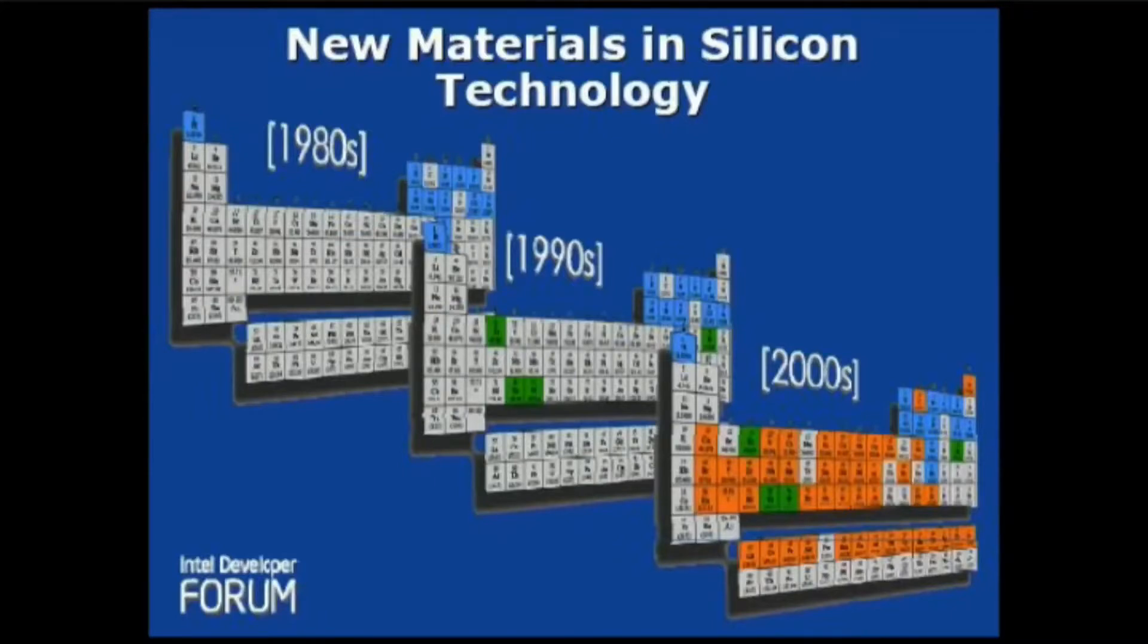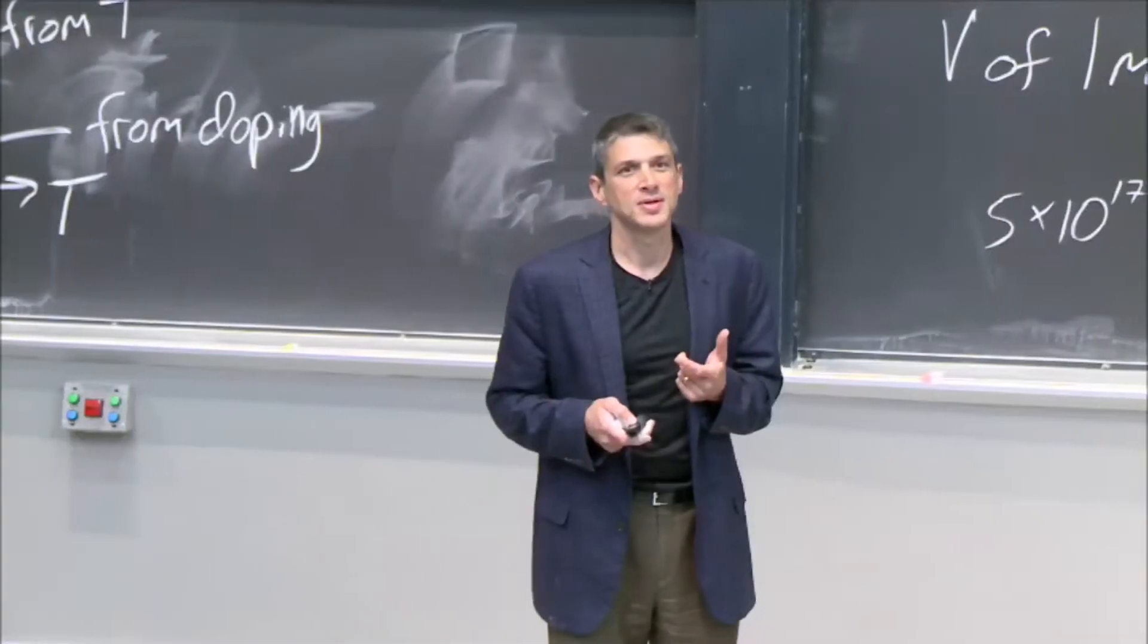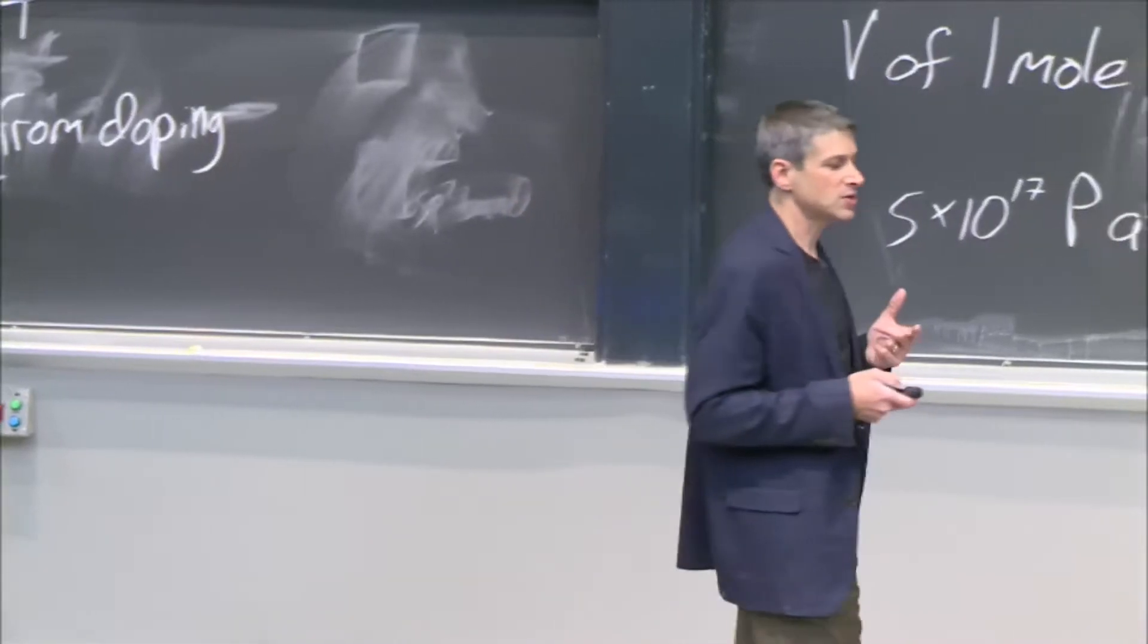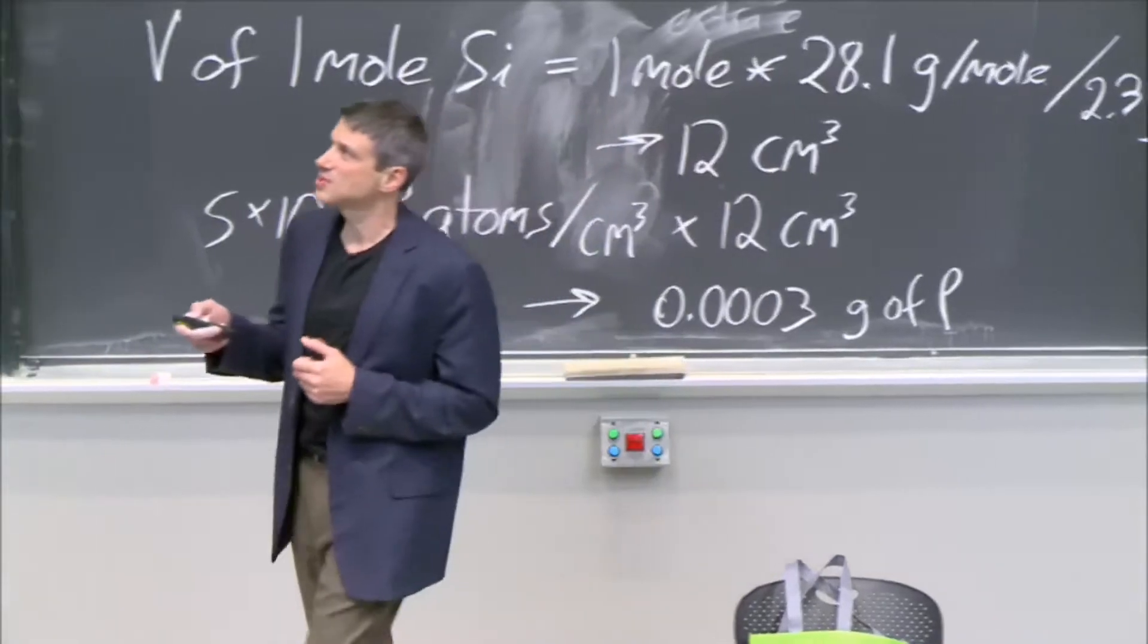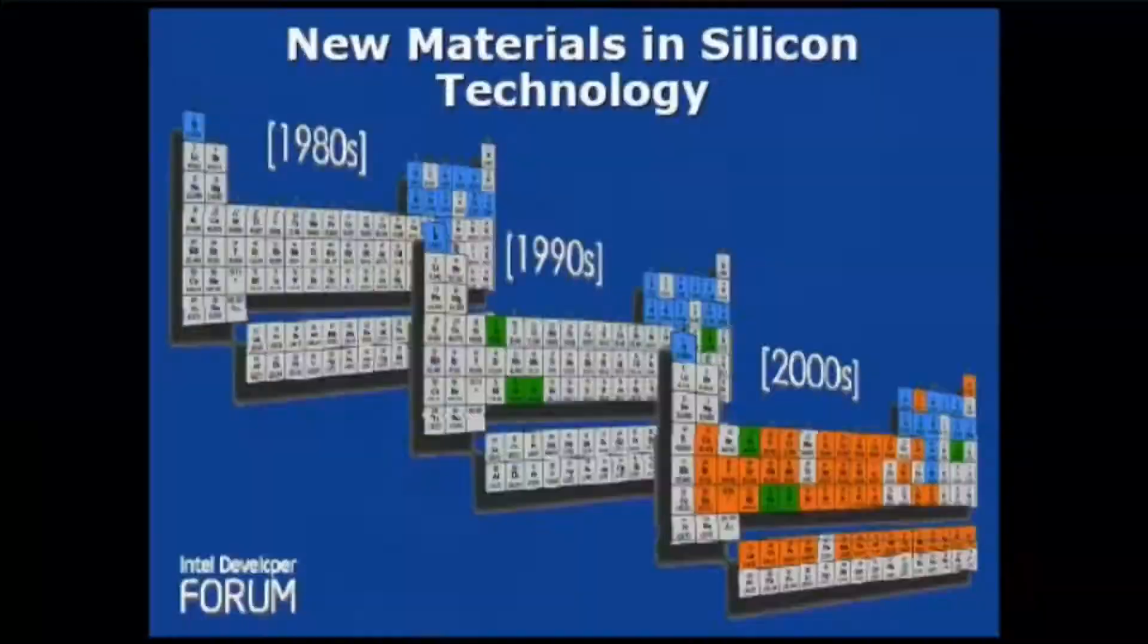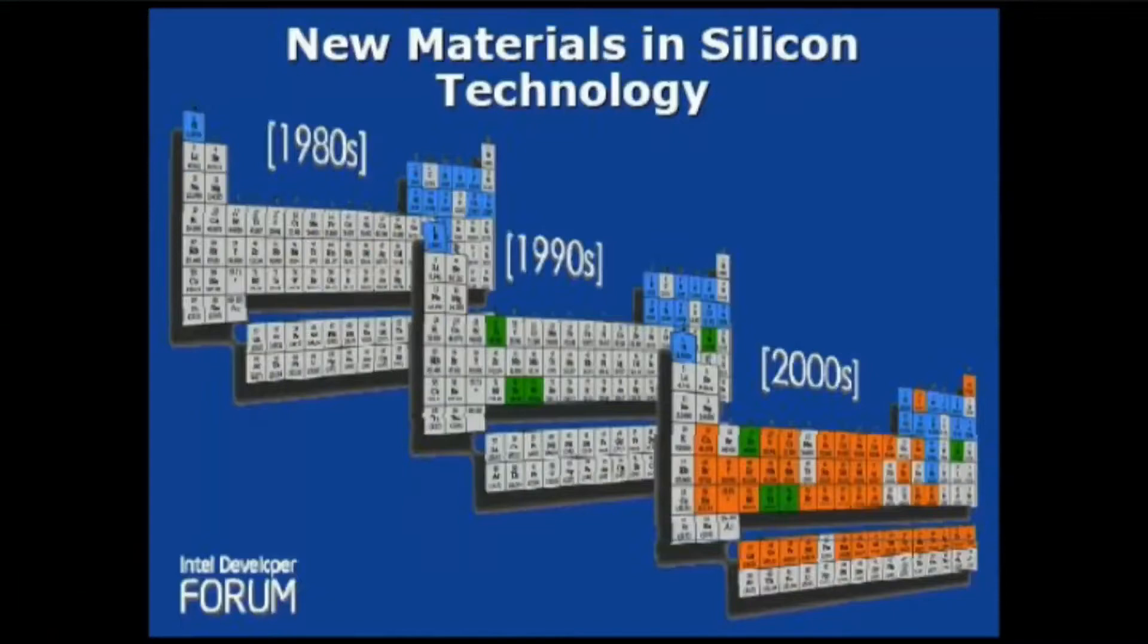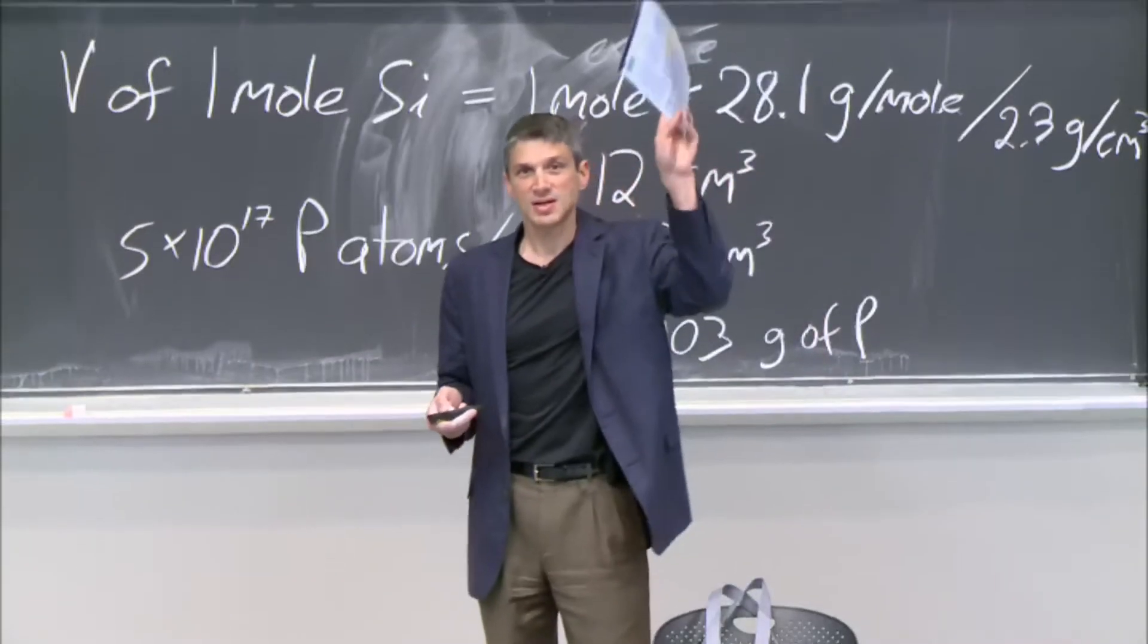So I love this chart. This is actually, unfortunately, they didn't update it. But this is an Intel chart that they used to show. And what they're showing is, how are they making chips? How much of the periodic table do they need to make the current chip? Well, in the 80s, there's almost nothing lit up here. Stuff we just talked about. But look at the 90s, and look at the 2000s. And today, it's 75% of this. It's literally 75% of this is in your phone.